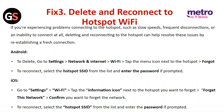For iOS, go to Settings, then Wi-Fi. Tap on the information icon next to the hotspot you want to forget and then click on Forget This Network. Confirm you want to forget the network. To reconnect, select the hotspot SSID from the list and enter the password if prompted.